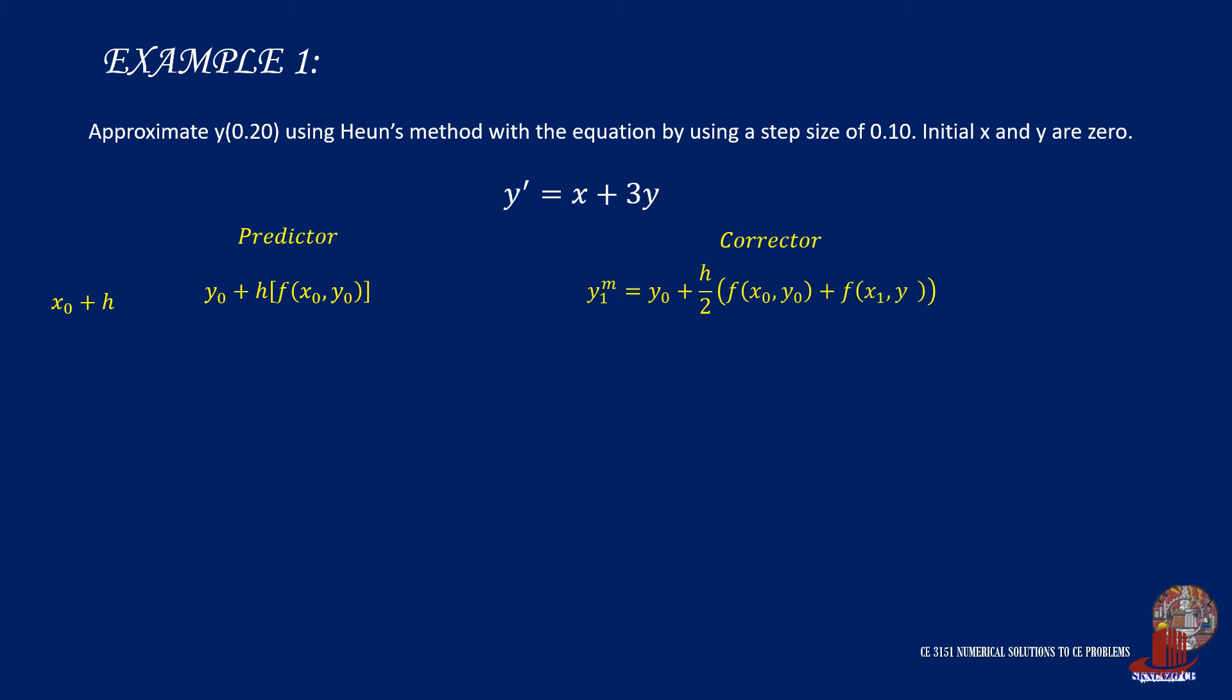Now plug the given starting with x0, which is equal to 0, and y0, also equal to 0. The first iteration would consider x1 as x0 plus h and that is 0 plus 0.1, which is 0.1 for x1.